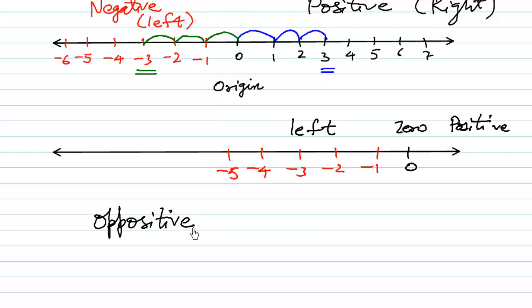Opposite numbers have opposite signs but they have the same figure to it. So the opposite of plus 3 is